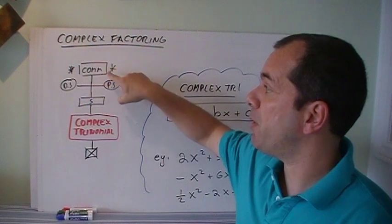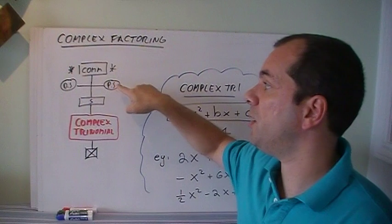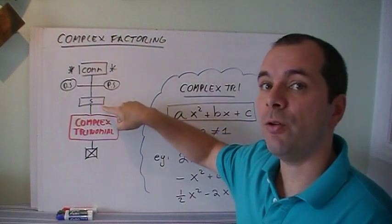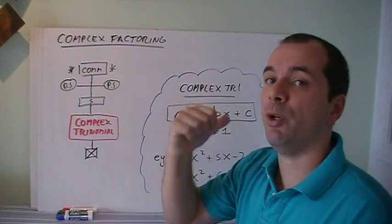Now, for the factoring, remember that the first thing we look for is common factor. Then we check for the special cases, difference of squares and perfect squares. Then we check for simple trinomial, and if not, we go and try what we're going to try right now.